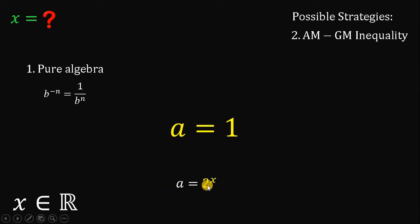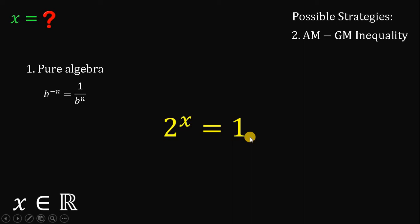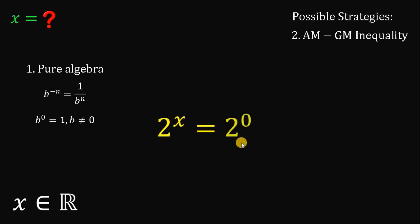Take note that a is also equal to 2 raised to x, so we can set 2 raised to x equal to 1. Recall that b raised to 0 equals 1, provided that b is not equal to 0. Since 2 is not equal to 0, this 1 can be replaced by 2 raised to 0. Now we have equal expressions with the same base on both sides, therefore their exponents must be the same, and we can say that x must be equal to 0.